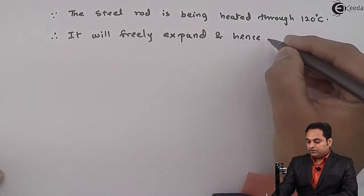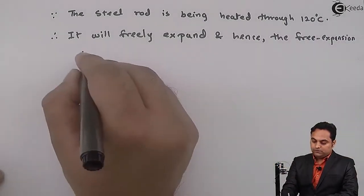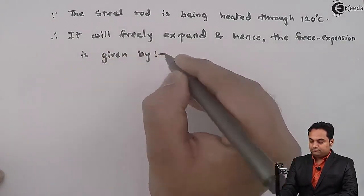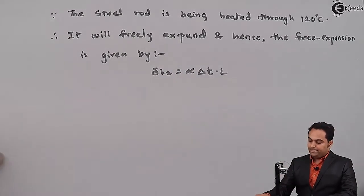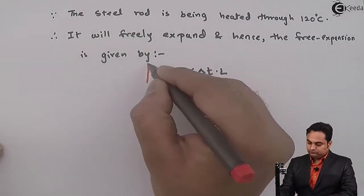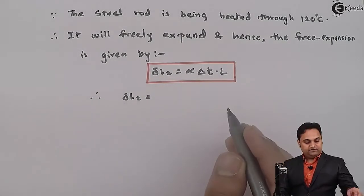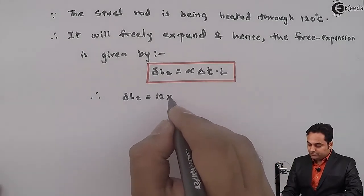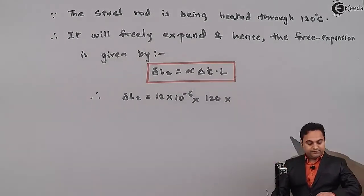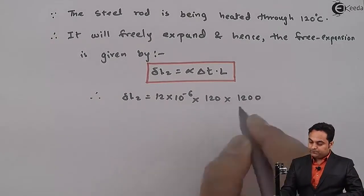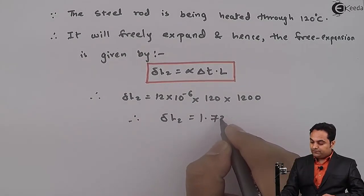And hence the free expansion is given by delta L2 is equal to alpha into delta T multiplied by L. So therefore delta L2 is equal to, alpha is 12 into 10 raised to minus 6, delta T that is 120, length 1200. So from this I will get delta L2. My answer is 1.728 mm.